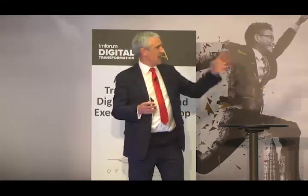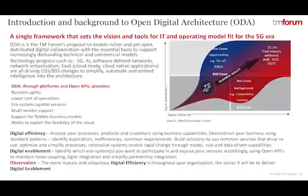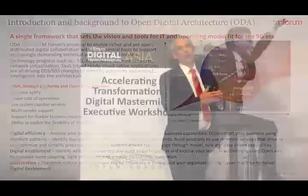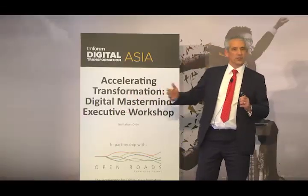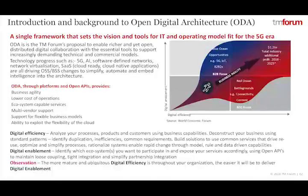Looking at digital transformation — a slide you may have seen in keynotes this week — the aspiration for many is to move into the top right-hand corner and become a digital service provider. You have a choice: transform along the x-axis for digital efficiency, or step up the y-axis to enable digital services. For digital efficiency, that means transforming your business to be more agile and efficient in the markets you participate in today — analyzing your processes, products, customers, and business capabilities.